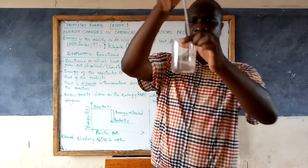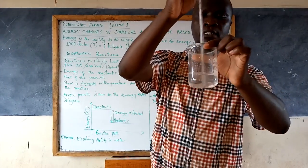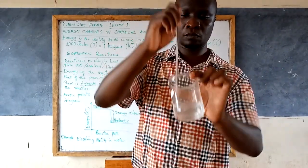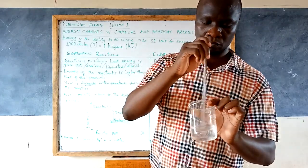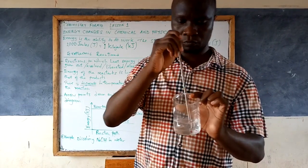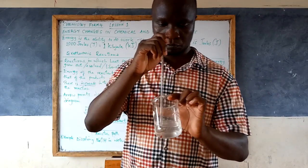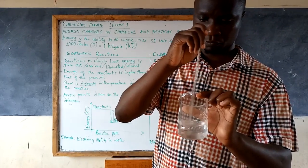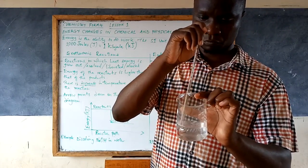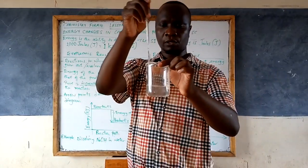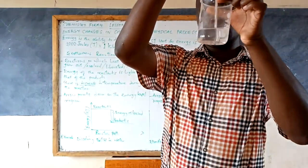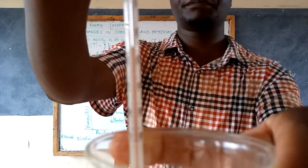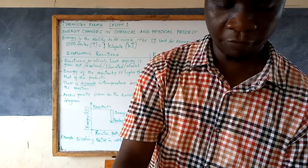Almost all sodium hydroxide is dissolved. The temperature has reached 26.5 degrees Celsius — that is the final reading, the highest temperature reached: 26.5 degrees Celsius.